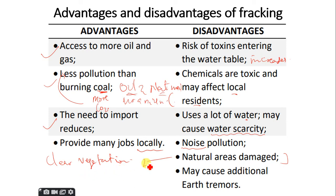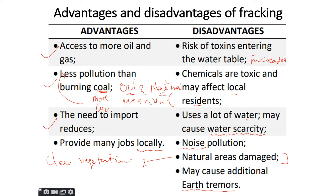Clearing vegetation leads to loss of habitat, affects the food chain, loss of biodiversity, and may cause additional earth tremors because of the high pressure — essentially the shaking of the earth. That's all about fracking that you need to know for IGCSE Environmental Management.